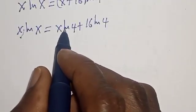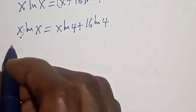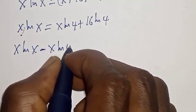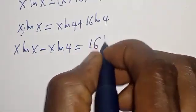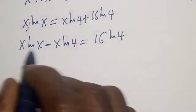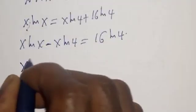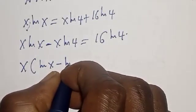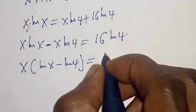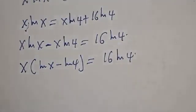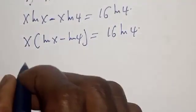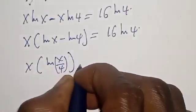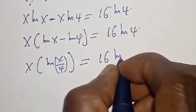Let's bring the s natural log of 4 to this side: s natural log of s minus s natural log of 4 is equal to 16 natural log of 4. Factoring the left side: s times natural log of s over 4 is equal to 16 natural log of 4.